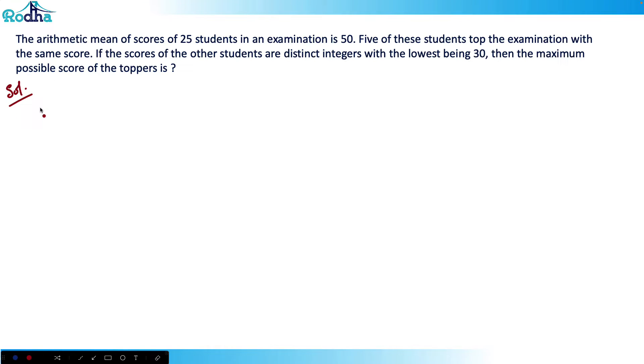Let's look at the next question from CAT 2021 slot three. It says that arithmetic mean of the scores of 25 students in an examination is 50. Five of these students stop the examination with the same score. If the scores of the other students are distinct integers with the lowest being 30, then the maximum possible score of the toppers is?